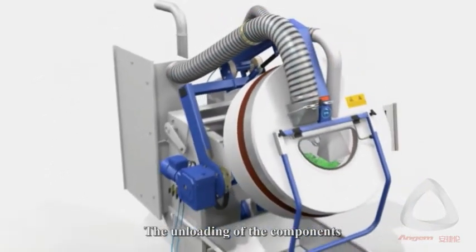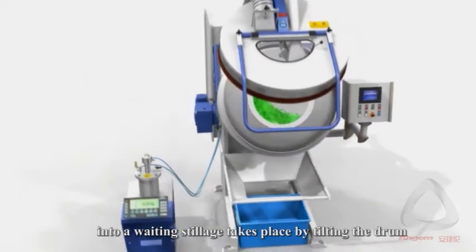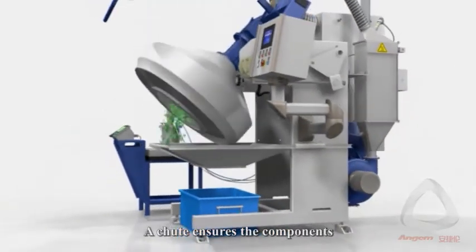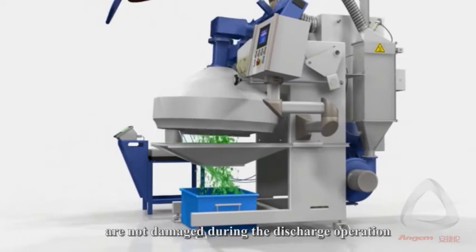The unloading of the components into awaiting stillages takes place by tilting the drum. A chute ensures that the components are not damaged during the discharge operation.